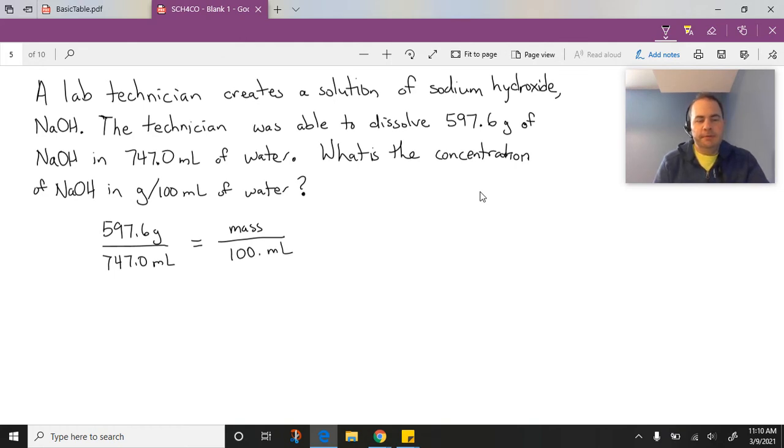So if I set up an equivalent ratio like this, our mass to the specific number of mils it goes into, we can compare that to what mass would be found in 100 mils. And then it's just a simple calculation here.